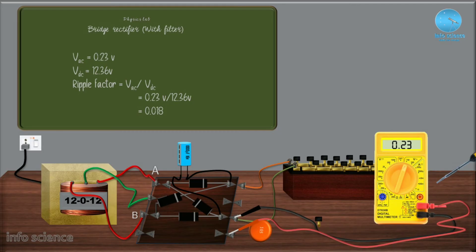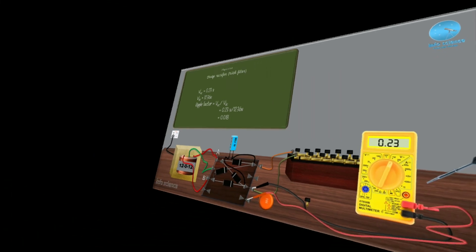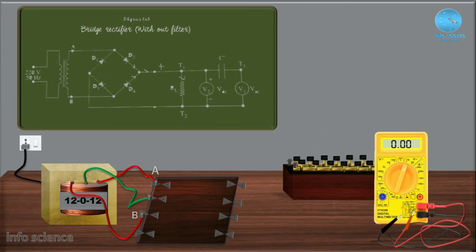We can move to the next section: the bridge rectifier without filter. We do the bridge rectifier connections, then connect the filter circuit and make the other connections for D1, D2.